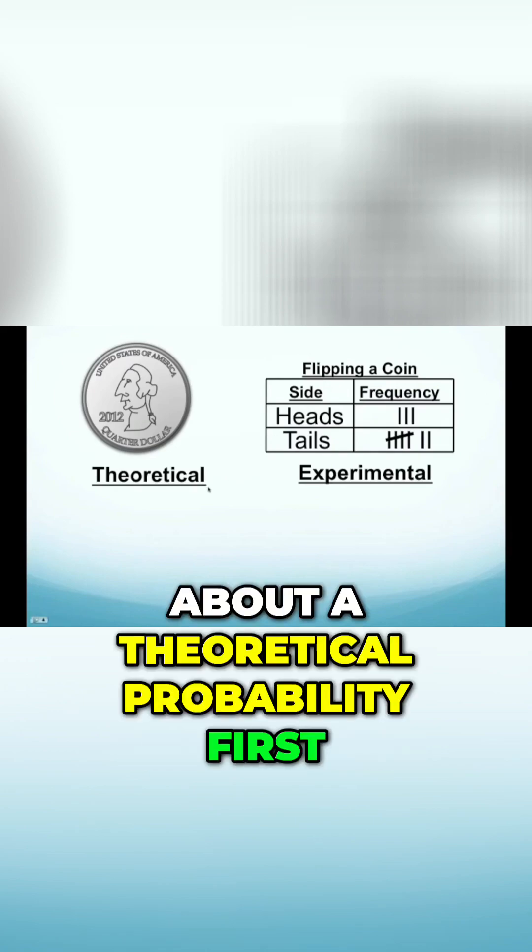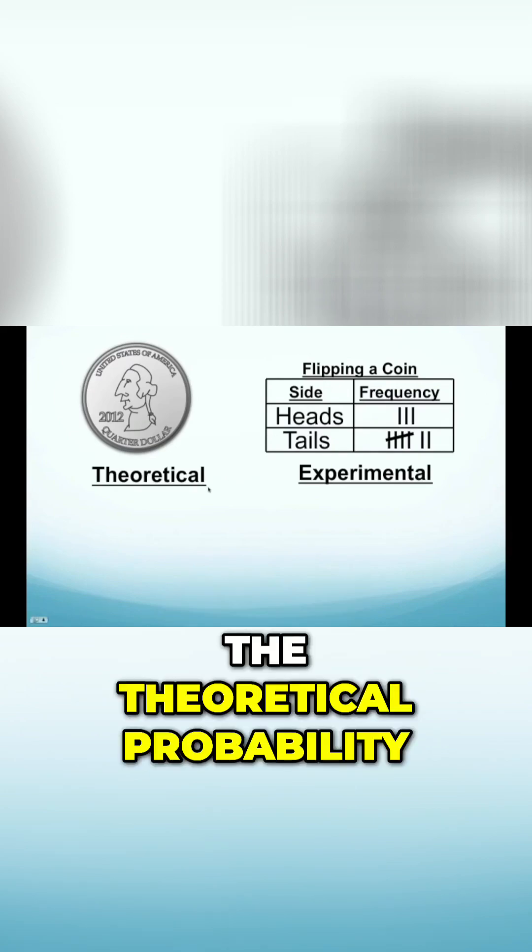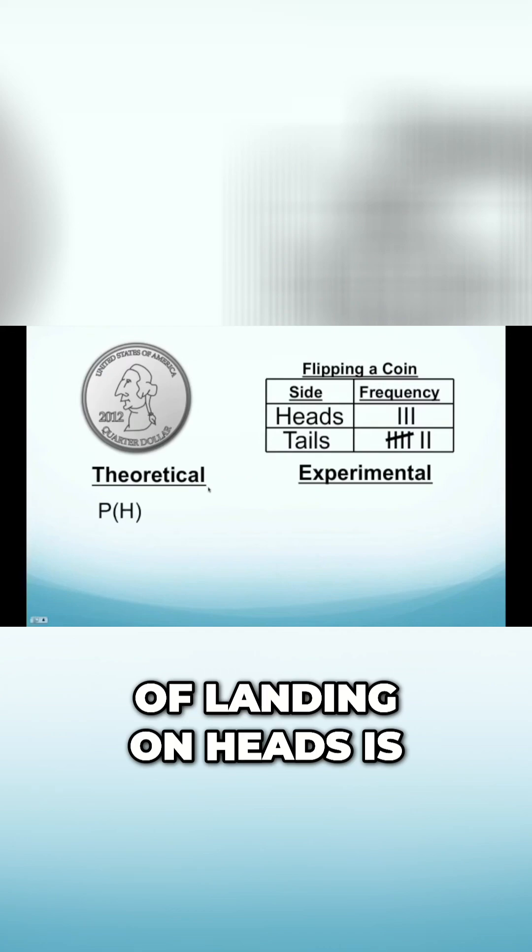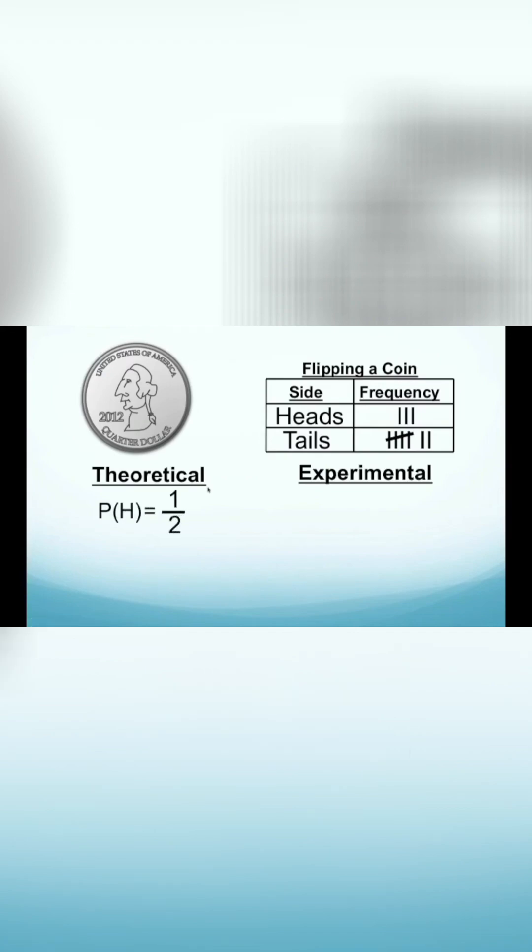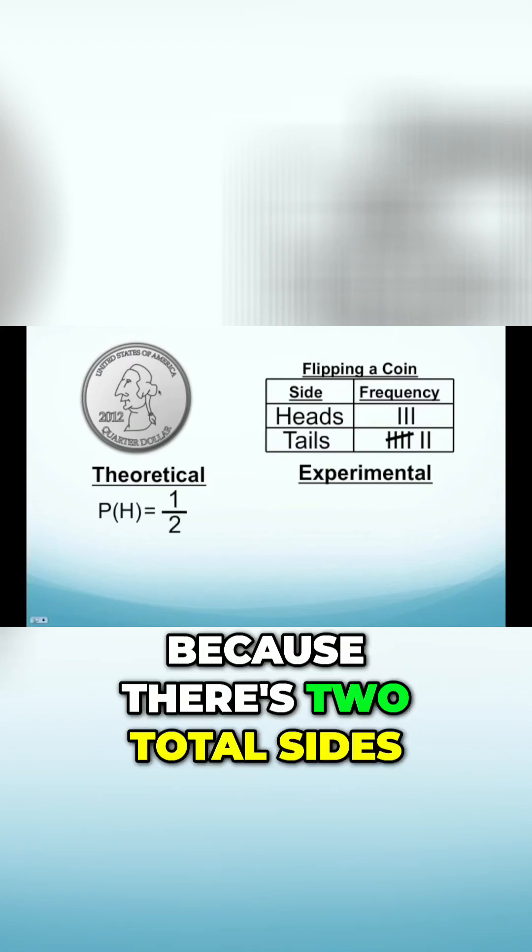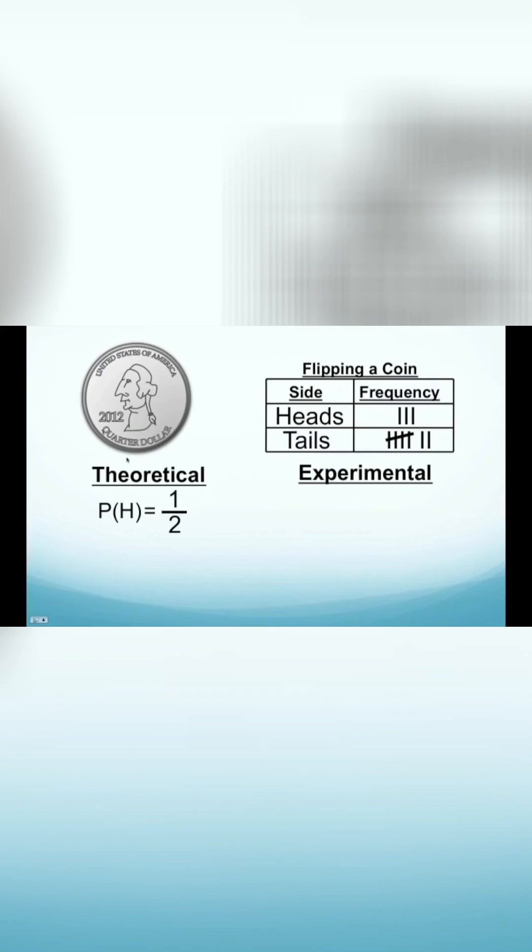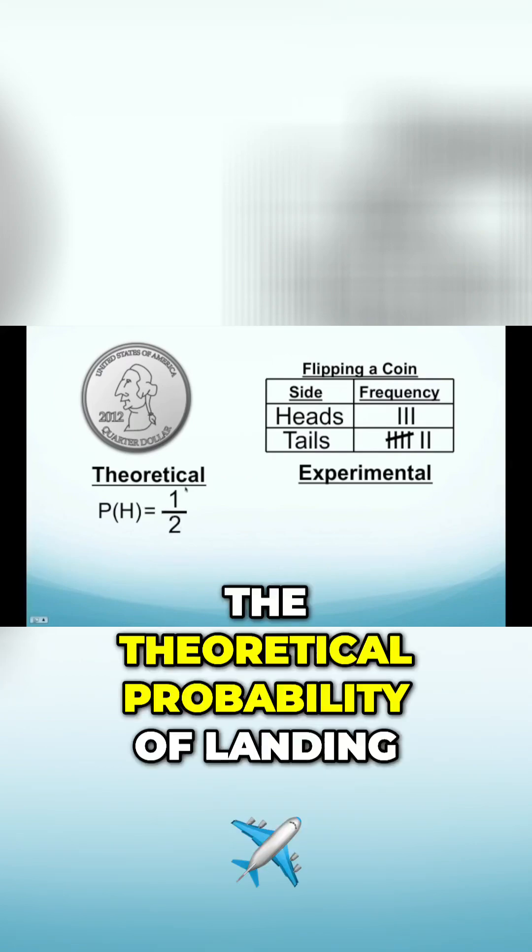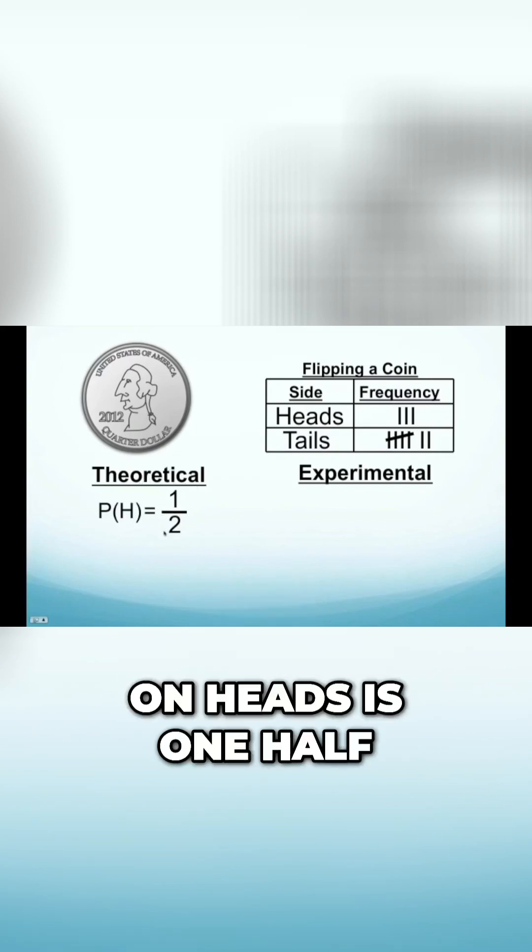Well, let's talk about our theoretical probability first. The theoretical probability of landing on heads is equal to one-half, because there's two total sides to a coin. We're basing it on facts. We know a coin has two total sides. One of those sides is heads. So the theoretical probability of landing on heads is one-half.